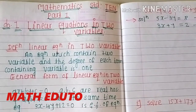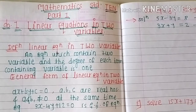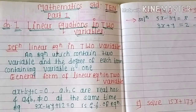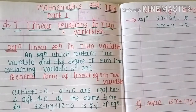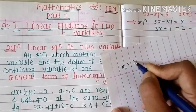Hello everyone, welcome to Math Jutov. Today we study the most important topic: linear equation in two variables. The definition is an equation which contains two variables, and the degree of each term containing a variable is one. Variables means x, y, z — we call these variables.